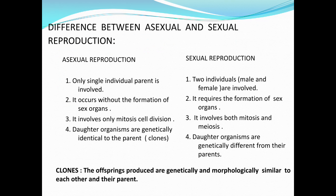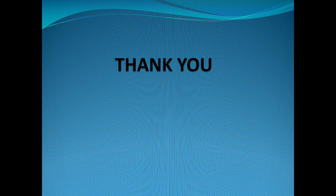Whereas in sexual reproduction, daughter organisms are genetically different from their parents, because of which in sexual reproduction we can see variation. So we have seen the differences between asexual and sexual reproduction. In the next class we will see the common methods involved in asexual reproduction. Thank you, stay home, stay safe.